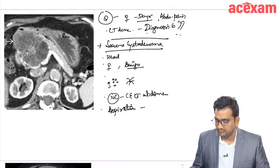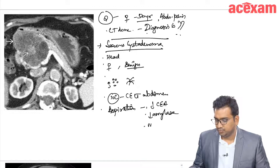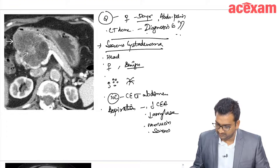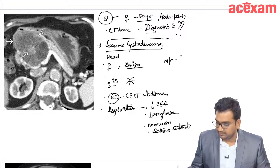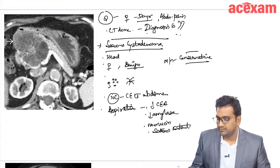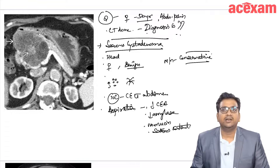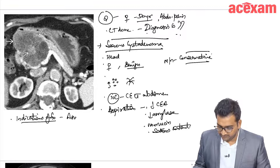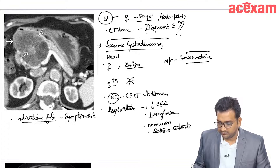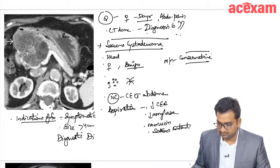Most patients with serous cyst adenoma are asymptomatic; if symptomatic, the majority will have vague abdominal pain. Investigation of choice is CECT abdomen. On aspiration there will be low CEA, low amylase, no mucin, and serous content. Management is conservative because it is mostly asymptomatic and benign. Indications for surgery: patient is symptomatic, size is more than four centimeters, or there is a diagnostic dilemma.